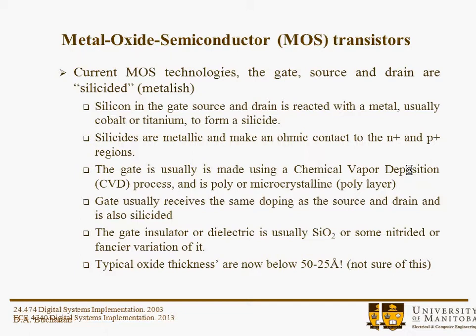In current MOS technologies, the gate, source, and drain are silicided, so they're metal-like. It doesn't concern us in great detail here, but it's good to be familiar with the terminology. Basically, the silicon in the gate materials reacts with a metal — maybe cobalt or titanium, or something even more exotic. Silicides are metal-like and allow you to perform ohmic contacts when contacting the source and drain regions. The gate would perhaps be made using a chemical vapor deposition process, forming polycrystalline silicon — often called the poly layer. The gate usually receives the same doping as the source and drain, and they're also silicided. The gate insulator is usually SiO2, though probably something slightly fancier, which you can find on the technology roadmap.